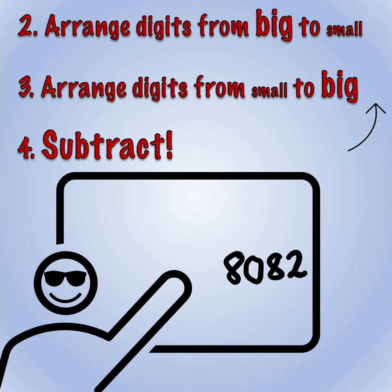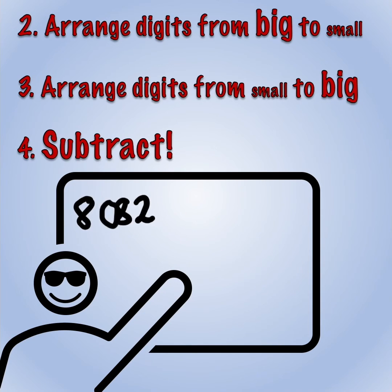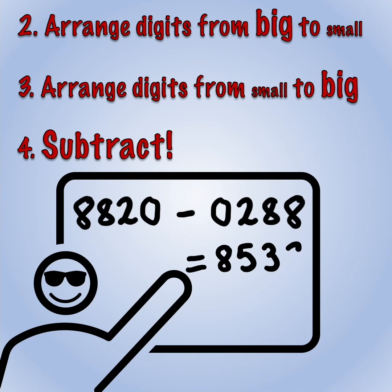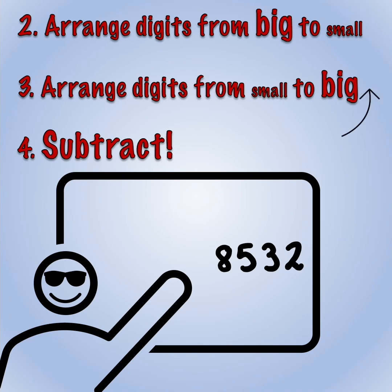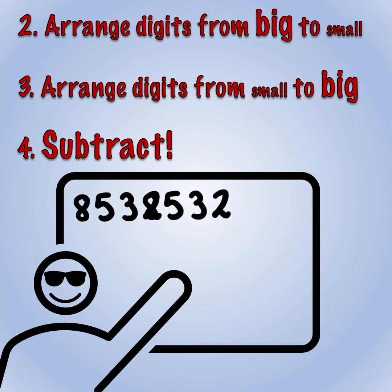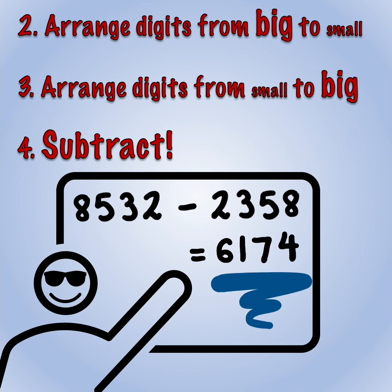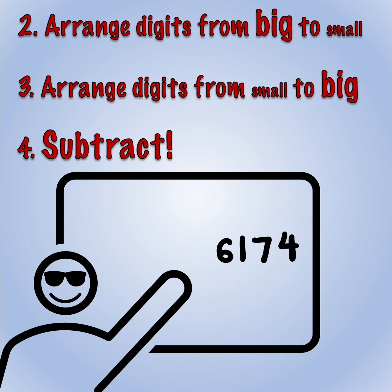Repeat the steps above — rearrange the digits from large to small and small to large and subtract the two numbers. Repeat again, rearranging the digits and subtracting. The shocking discovery is that in no more than seven stages you'll always end up at 6174: Kaprekar's constant.